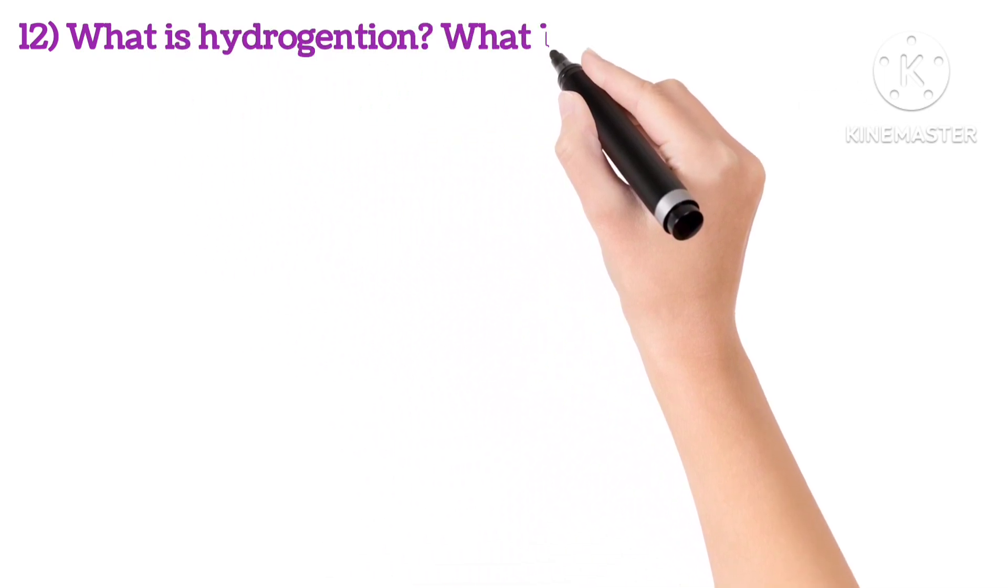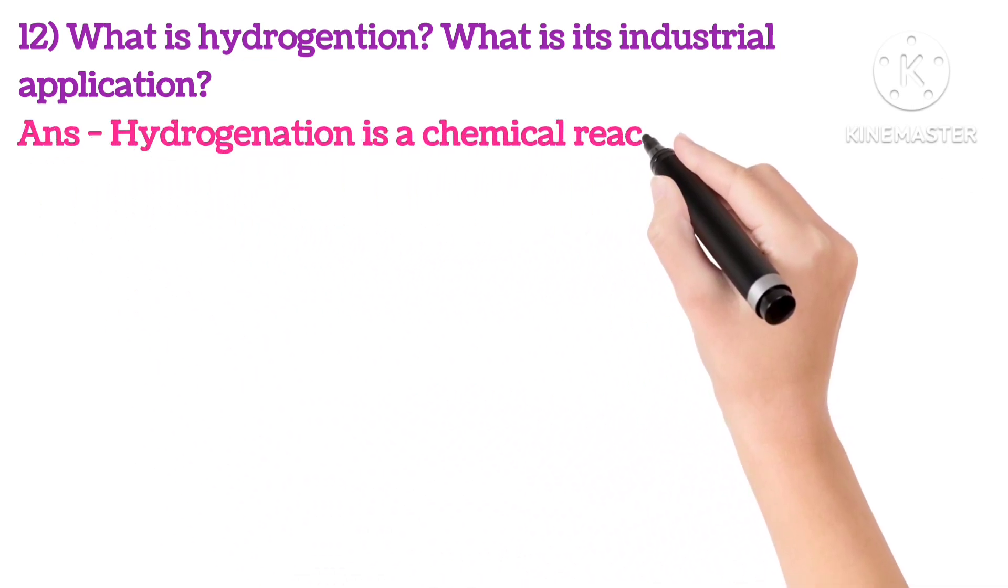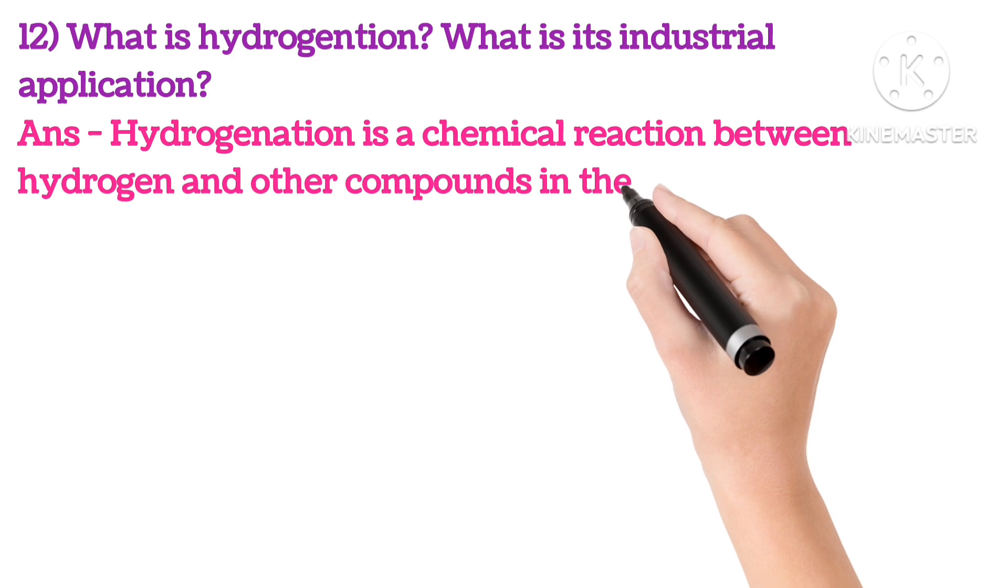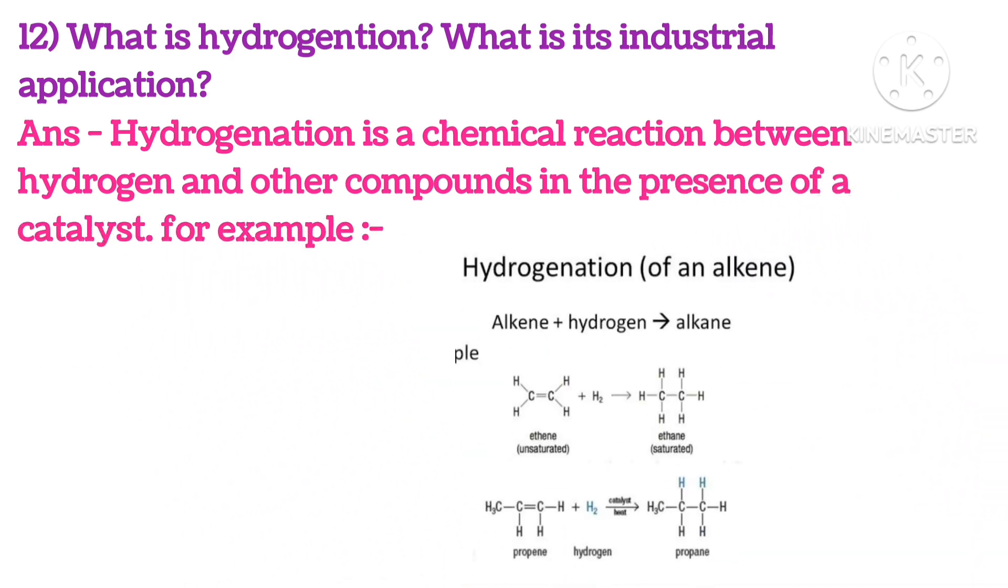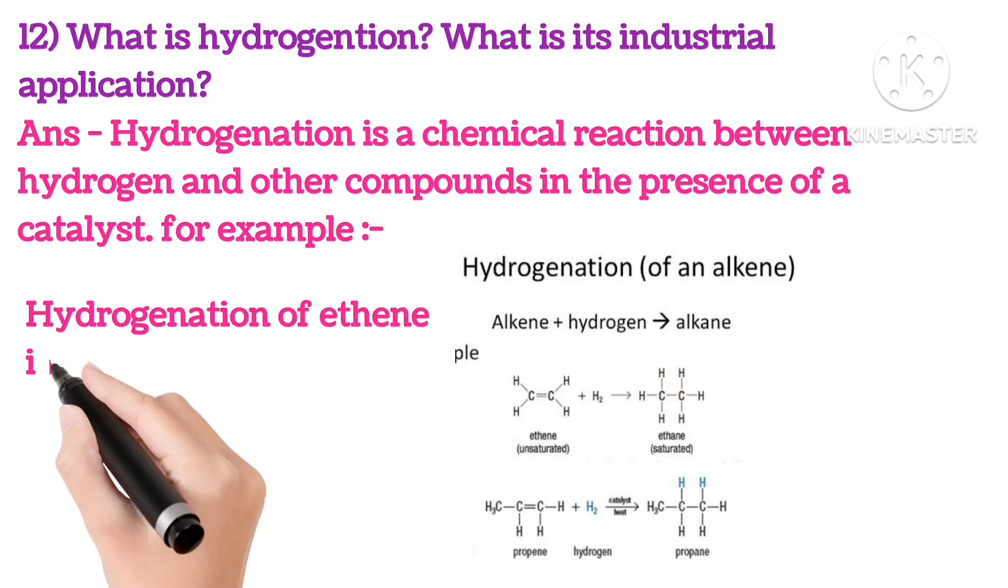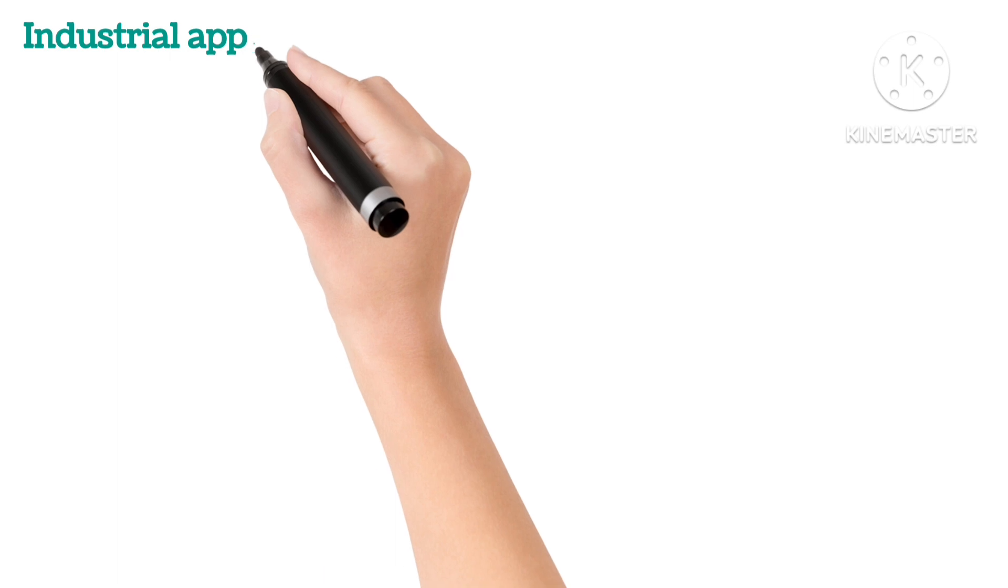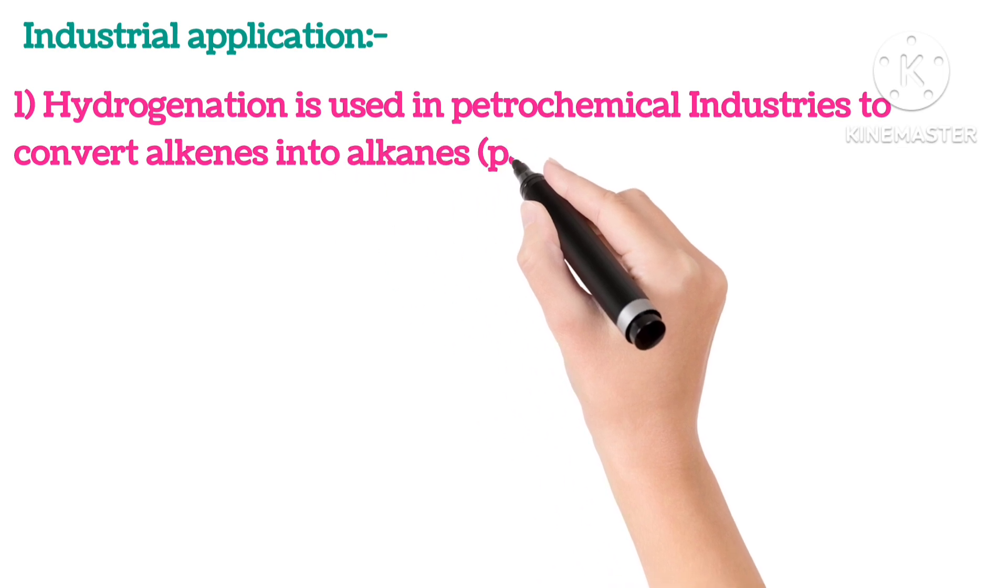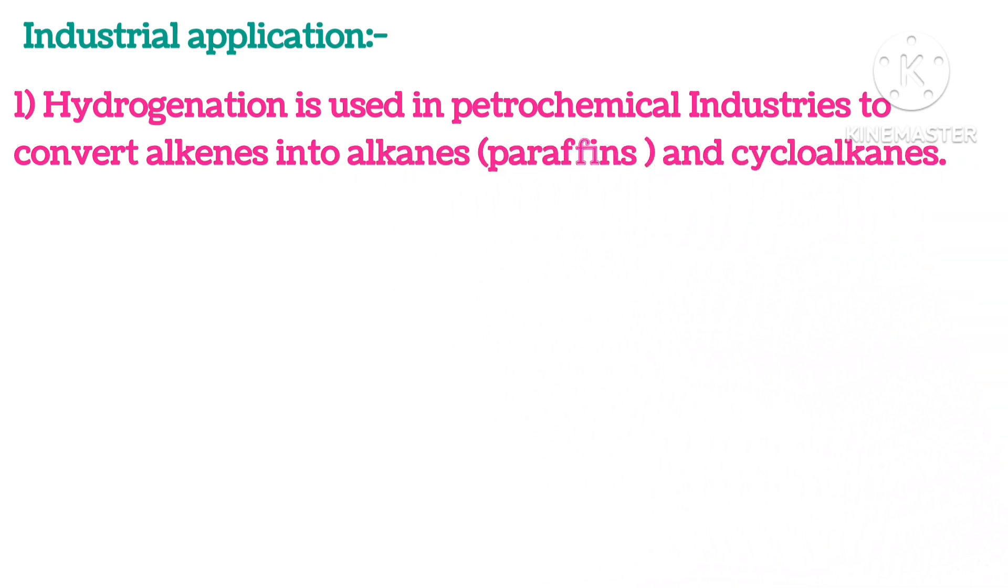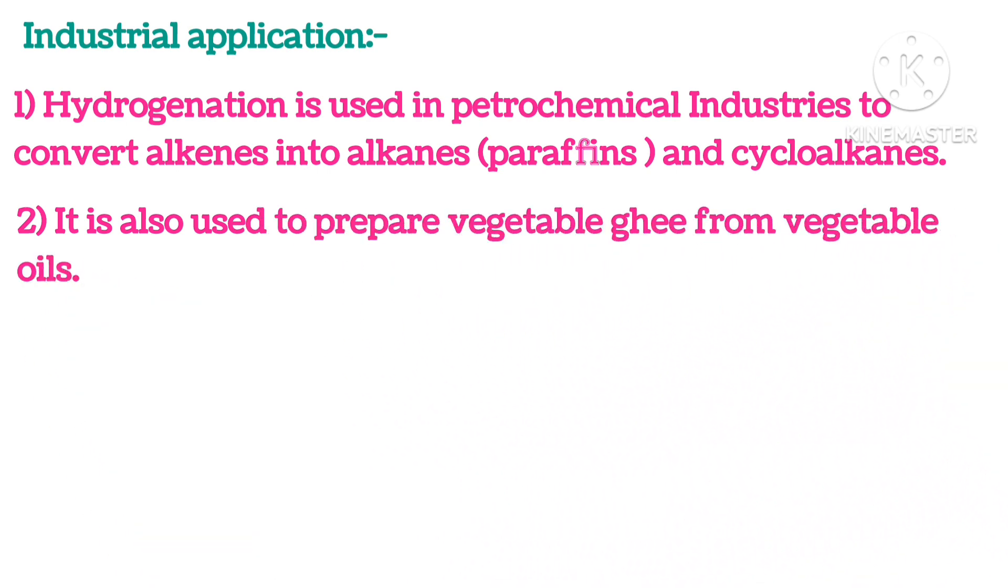Twelfth, what is hydrogenation and what is its industrial application? Hydrogenation is a chemical reaction between hydrogen and other compounds in the presence of catalysts. For example, hydrogenation of ethene into ethane in the presence of catalyst nickel. Industrial applications are: hydrogenation is used in petrochemical industry to convert alkenes into alkanes and cycloalkanes, and it is also used to prepare vegetable ghee from vegetable oils.